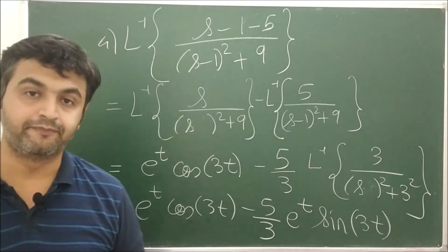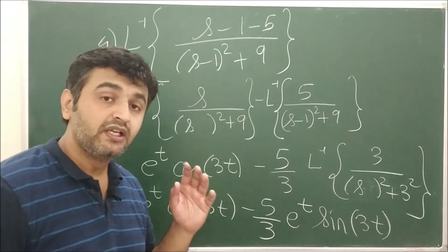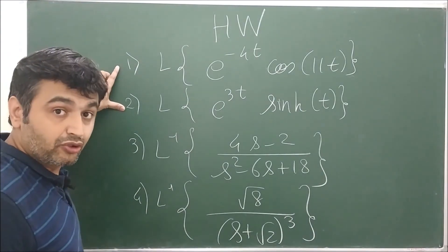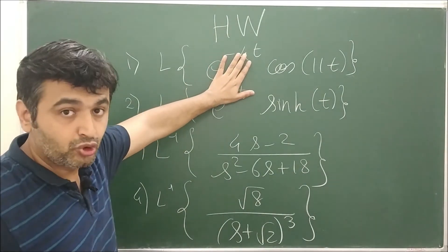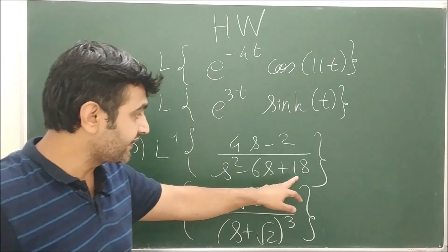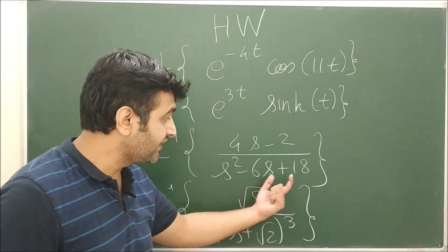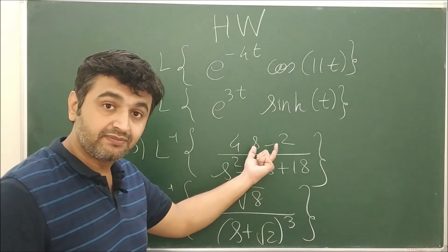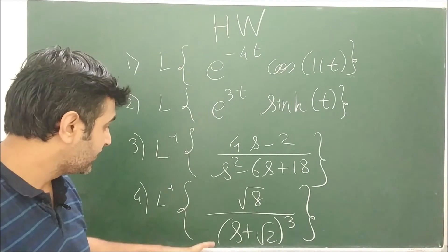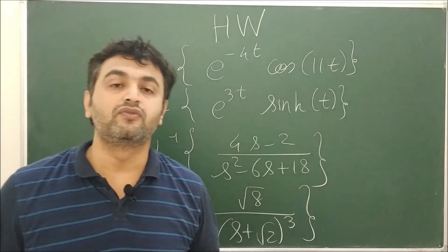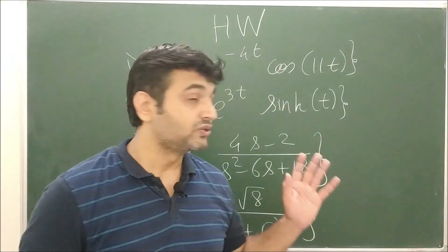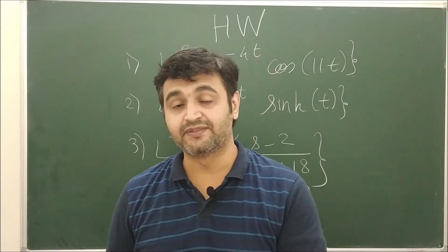So I hope the first shifting theorem is clear. Now let me give you some homework problems — try to solve them and post your answers in the comment section so everyone can verify. There are 4 questions: the first 2 are on Laplace transforms and the remaining 2 on Laplace inverse. For the first 2, see the exponential, remove it, find the Laplace, and do the shifting. For the last 2, you can write 18 as 9 + 9 so the denominator becomes (s − 3)² + 9, then bring s − 3 in the numerator as well. If you have any doubts, ask me in the comment section. If you liked the lecture, do not forget to like, share, and subscribe. Thank you.